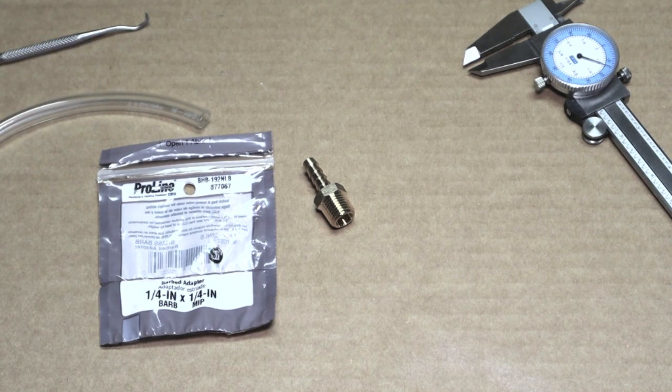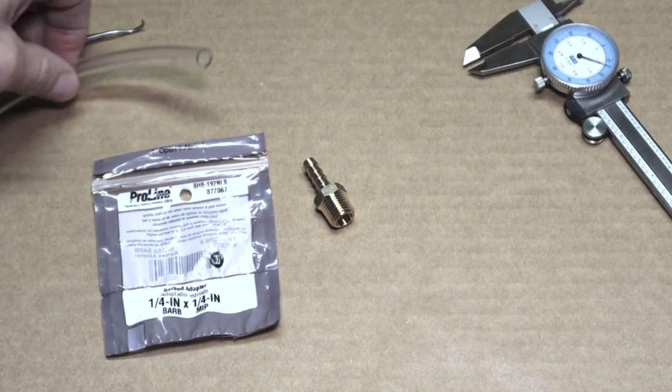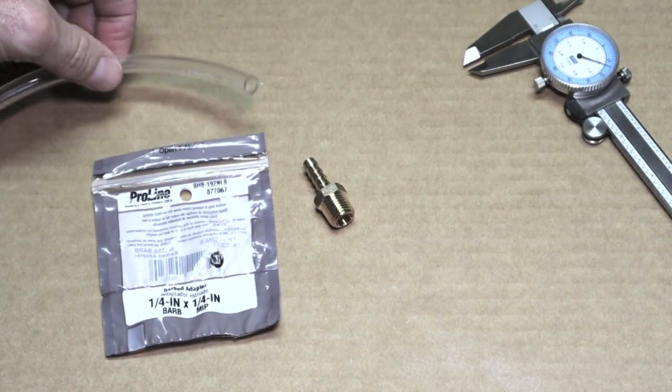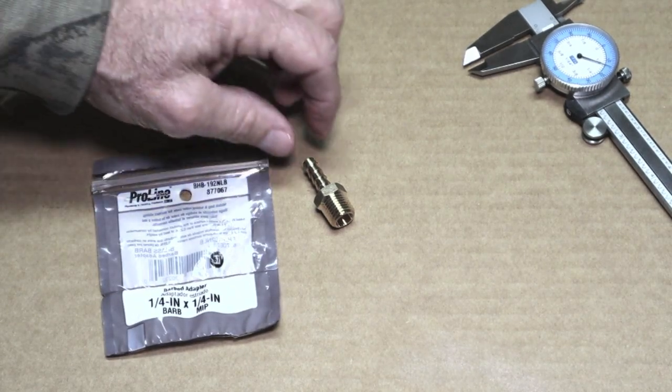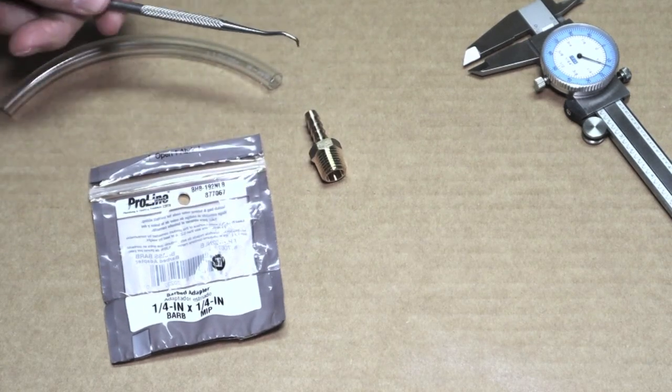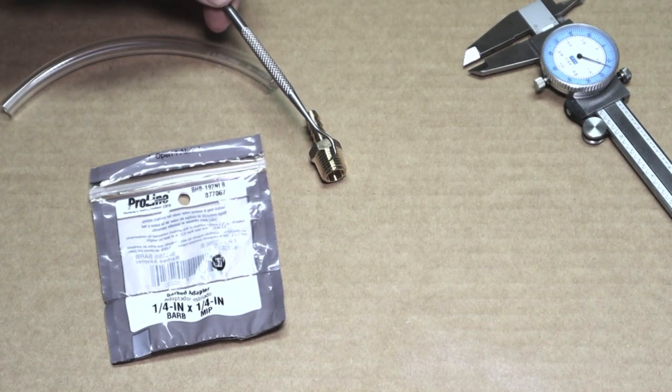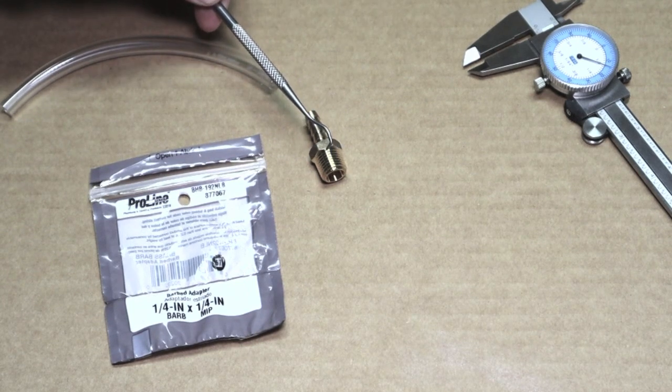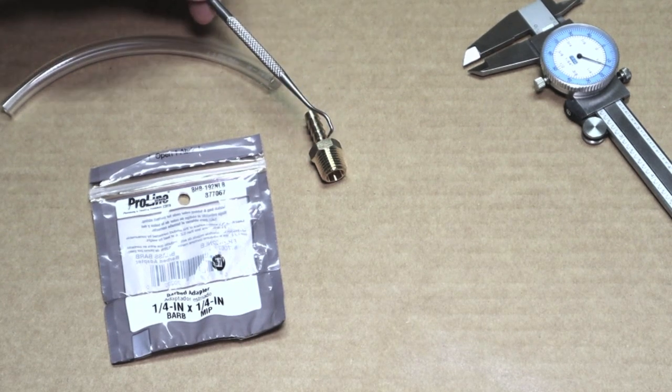The biggest issue is after you find out what size of line you need, what size of line you're going to run, what kind of barbed fitting you're going to run. The next issue is what size of hole are we going to drill in our PVC pipe to give us a good tight fit.